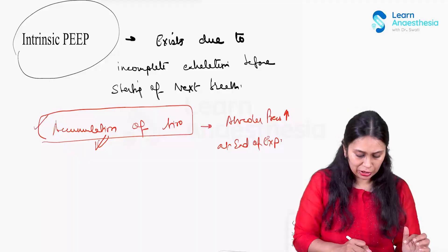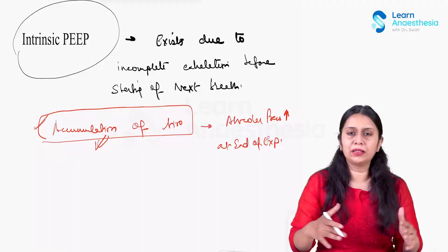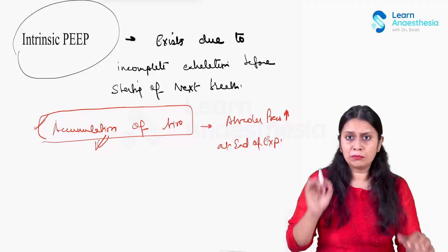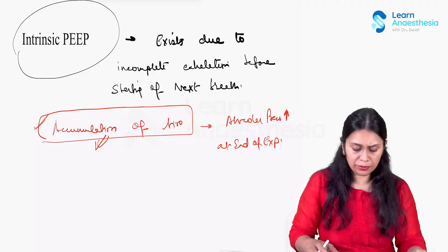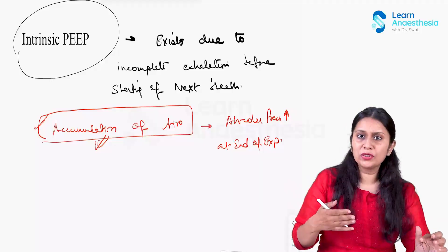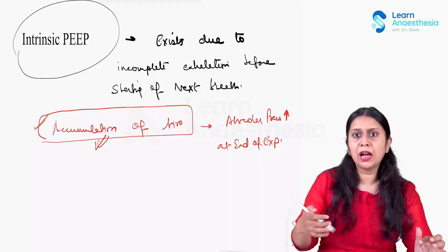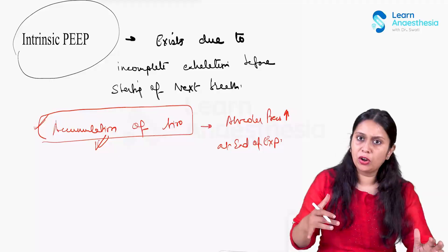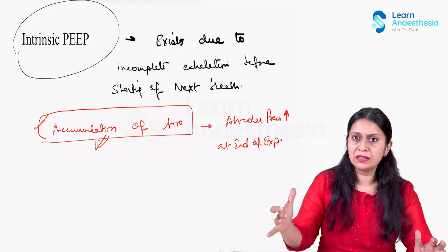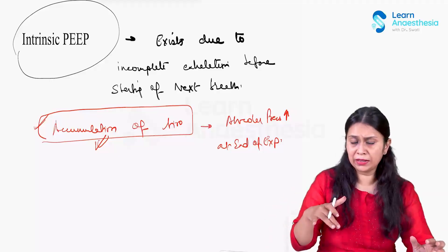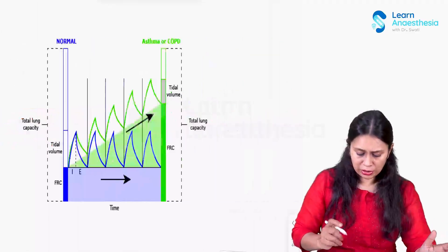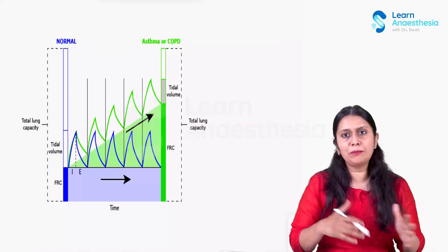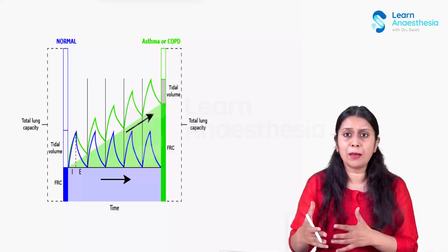Air accumulates with each breath progressively, so a positive alveolar pressure is developed in the alveoli. This is what is called dynamic hyperinflation, or development of intrinsic PEEP, or we call it breath stacking. Let me show you an image comparing a normal breath and a breath in which breath stacking is happening.